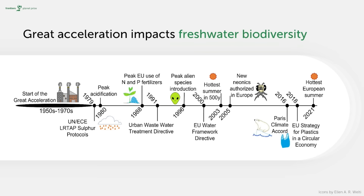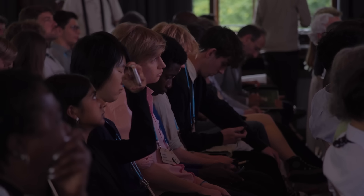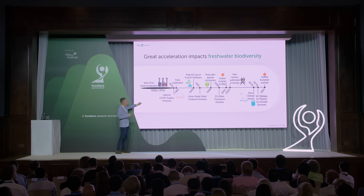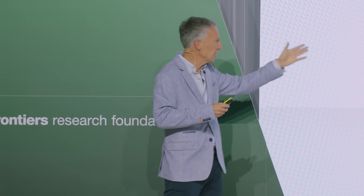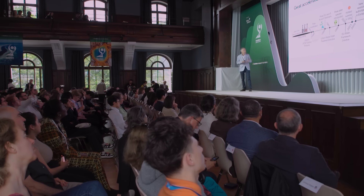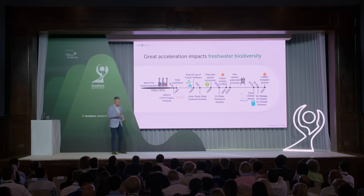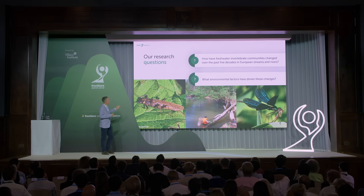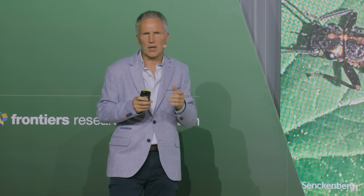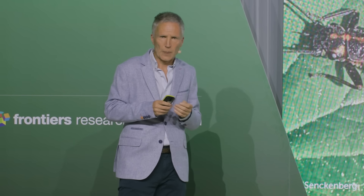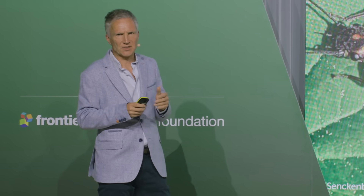On the lower part of this figure, you see some mitigation measures — regulations that have been enacted. For example, in response to acidification, there was the United Nations sulfur protocols enacted in 1979 to make our air cleaner and thereby reduce the acidification effect. Another example is the Urban Wastewater Treatment Directive: more wastewater treatment plants have been built, and those that existed have been improved. A lot of things have happened over the past decades, and we were addressing two major questions: how have freshwater invertebrate communities changed over these past decades in streams and rivers in Europe, and what are the environmental factors that have driven these changes?